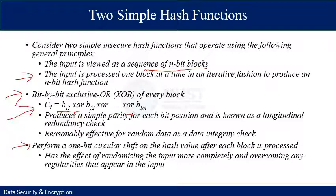A simple way to improve matters is to perform a one-bit circular shift on the hash value after each block is processed. This has the effect of randomizing the input more completely and overcoming regularities in the input. The procedure initializes an n-bit hash value to zero, processes each block of data, performs a rotation of the current hash value to the left by one bit, then XORs the block into the hash value. This provides better randomization and removes regularities in the input data.